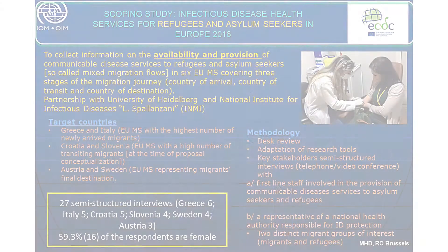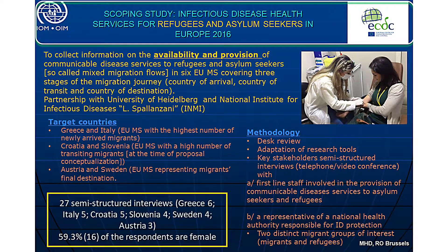That's at country level, not to mention at European level. There are gaps in data collection and health assessment. Where something systematic is being done, it's usually only about infectious disease. For example, in Spain in Melilla and Ceuta they use what they call the African profile screening on infectious disease systematically, but overall each actor in the field uses different types of assessment.